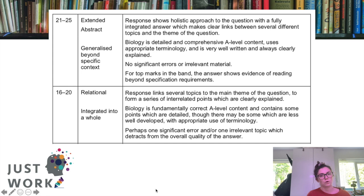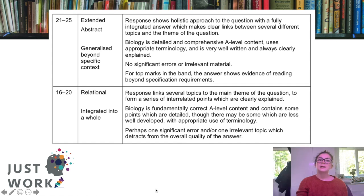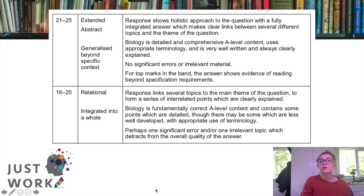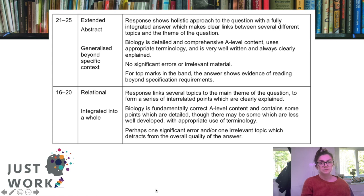My top tip for reaching band five is to find two to three things beyond your specification that you could use across a series of examples. I'll link down below pretty much every essay title there's ever been. You'll see themes that come up again and again — if you can come up with two or three beyond-spec examples for those themes, that would be brilliant. It doesn't have to be anything major — it could just be a paper you've read or a bit of extra content. People think they should be reading for hours beyond the specification; that's really not the case. Just come up with three or four facts you can throw in.